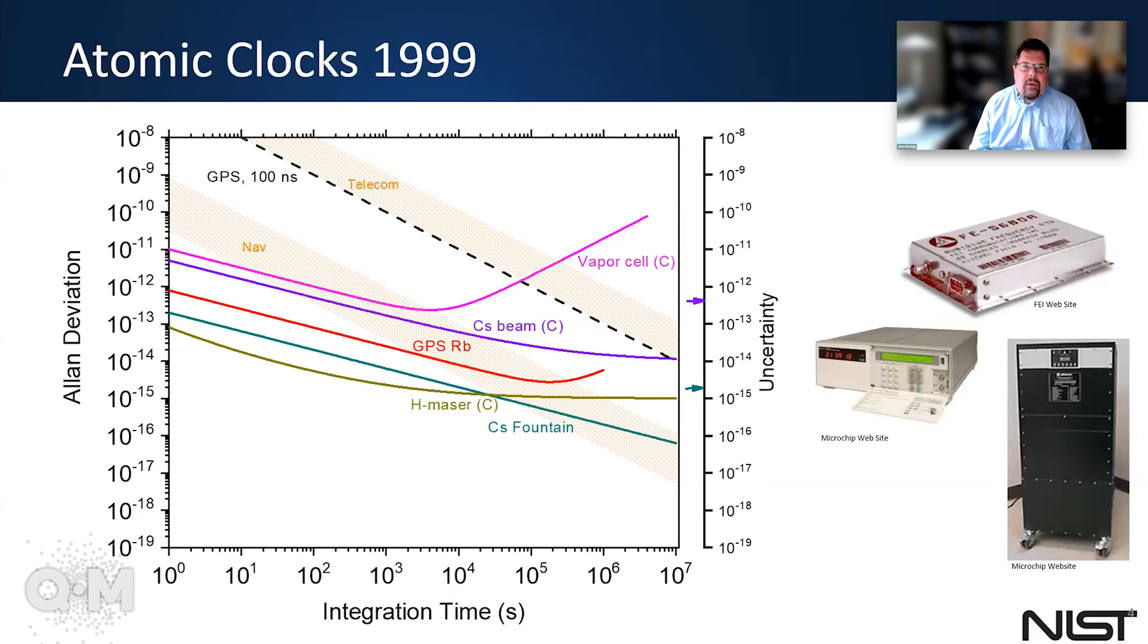So when I started in this business about 20 years ago, there were basically three types of clocks that were available. There were vapor cell clocks based on thermal vapors of atoms confined in glass vapor cells. There were cesium beam clocks that were based on beams of atoms, cesium. And these were really the workhorse for accurate timing. And finally, there were hydrogen masers that were used for very precise timing. And you can see here, vapor cell clocks, they're small,